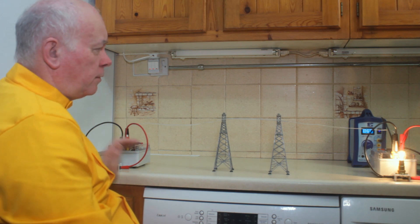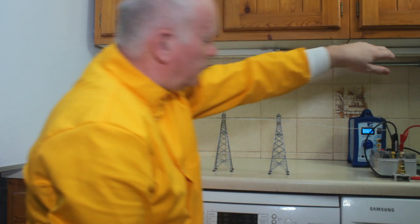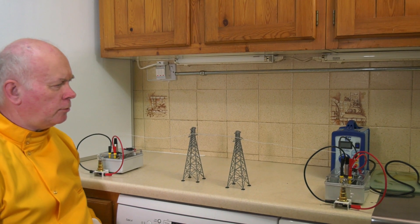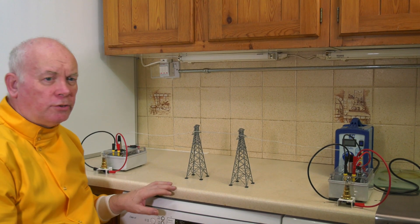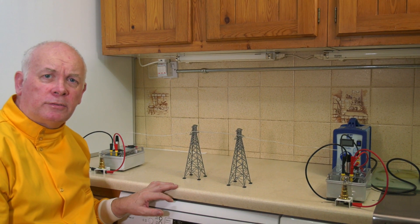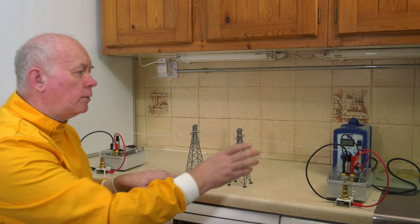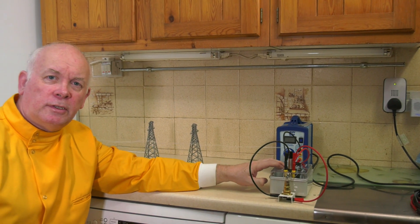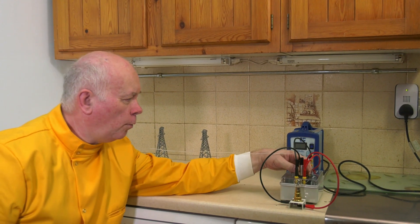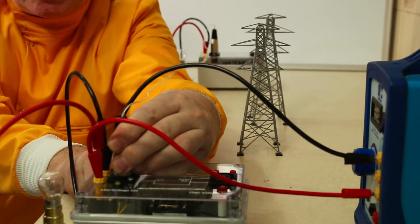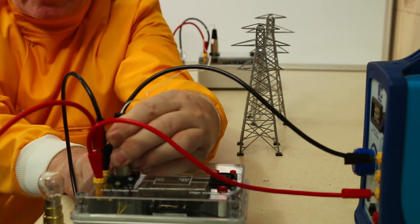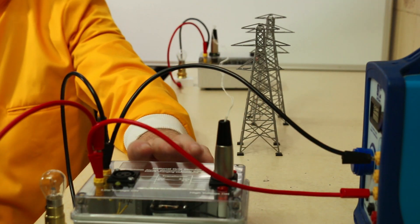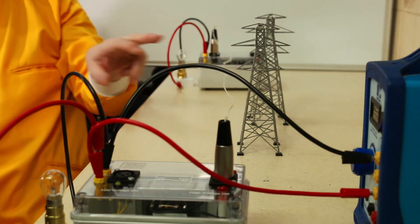What we're going to do is change the setup. Instead of using the system we've got, I'm going to put the electricity through a transformer. This is a step-up transformer, and it's going to convert the 12 volts that my power station is making to 240 volts.